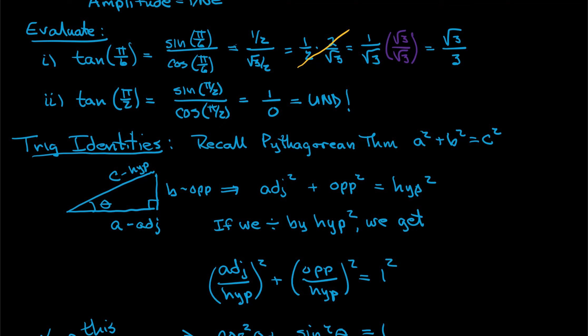If we compute the tangent of π/2, we again break it up as sine divided by cosine. Looking at the unit circle, the sine of π/2 — the y value — is 1, and the cosine of π/2 — the x value — is 0. This gives us the fraction 1 divided by 0, which is undefined. It is completely legitimate to say this value does not exist for this particular angle measure.